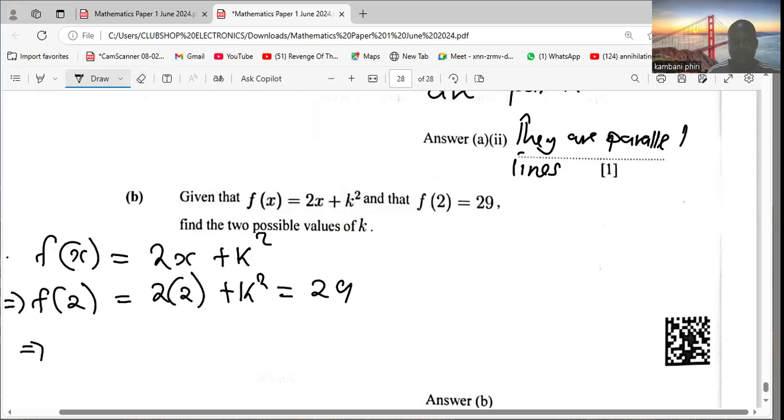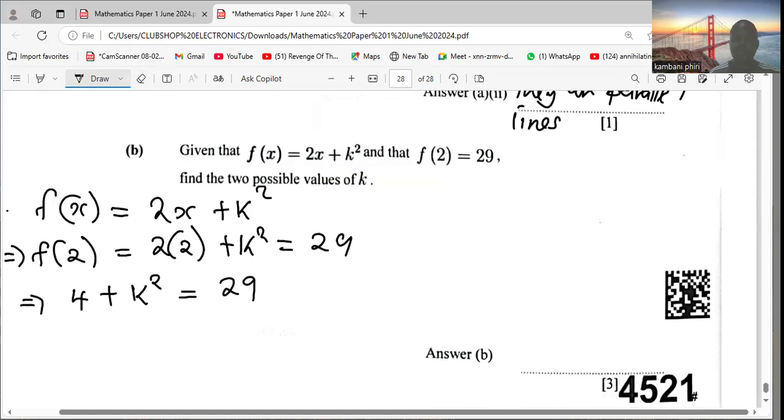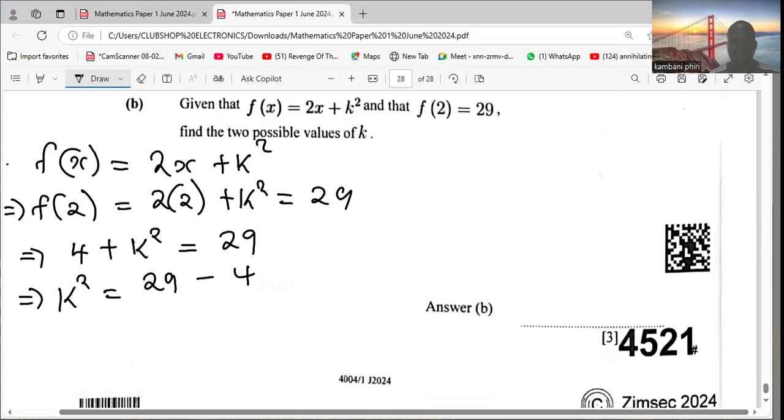So this implies that we have 4 + k² being equal to 29. So now what are we going to have? We will say k² is equal to 29 minus 4, and k² is equal to 25.